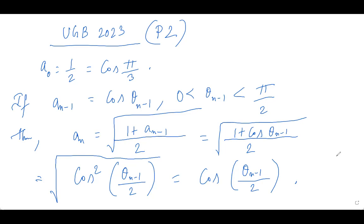So basically you see that if theta_{n-1} is from 0 to pi by 2, so theta_{n-1} by 2 is also from between 0 and pi by 2. And so basically our theta_n becomes nothing but theta_{n-1} by 2.